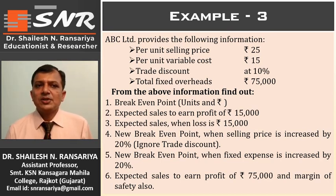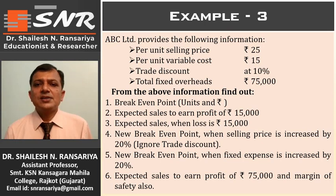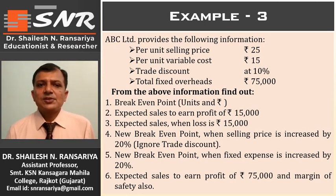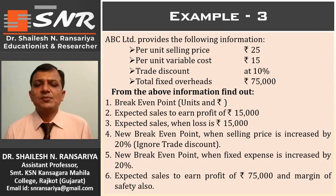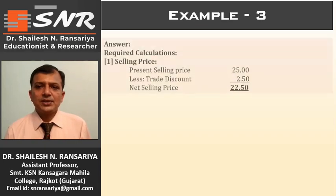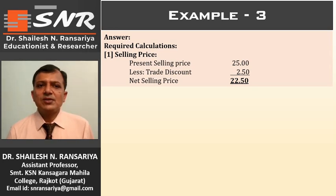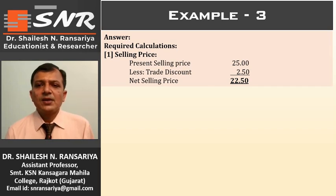Now, first we can make the required calculations. In this example, trade discount is given, so we have to reduce trade discount from the selling price. First, we will calculate the net selling price. Selling price given in the example is Rs. 25, less trade discount 10%, which is 2.5. So, the new selling price or net selling price is Rs. 22.5.